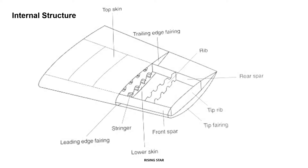Inside the wing we have two spars: one is near the trailing edge and the other one near the leading edge. In between the spars we have ribs, and there are holes made in the ribs to allow the flow of fuel during flight. We also have stringers attached to the skin.